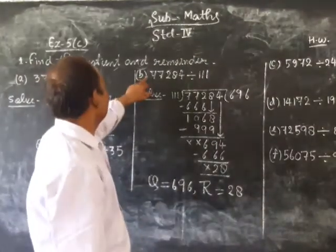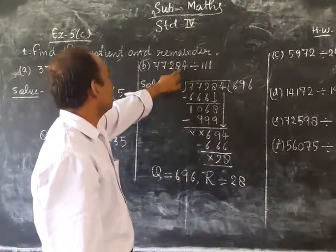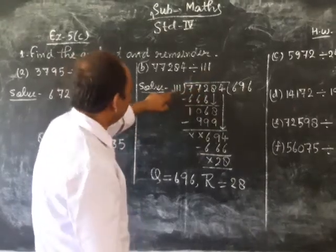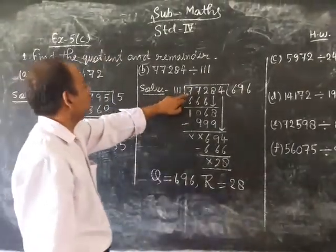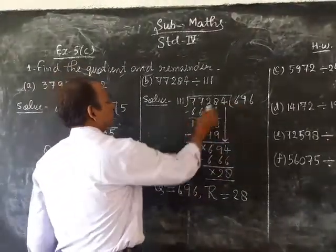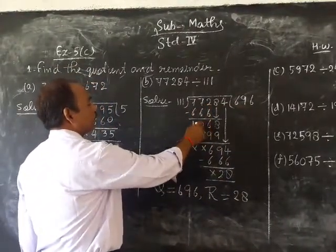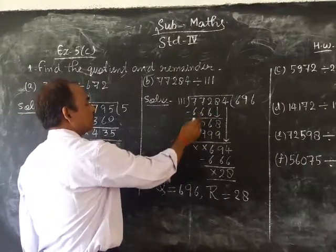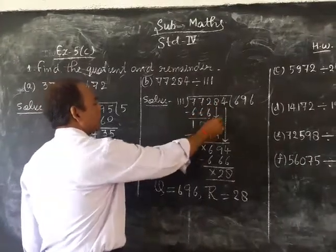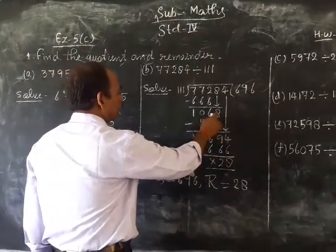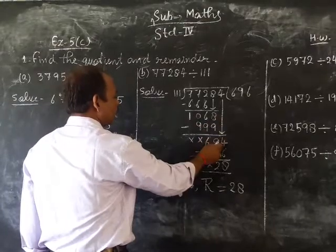Problem B: 77,284 divided by 111. So 111 goes into 77,284. 111 into 777 goes 6 times, 6 times 111 equals 666, subtract. 111 into 1112 goes 9 times, 9 times 111 equals 999, subtract to get 113.